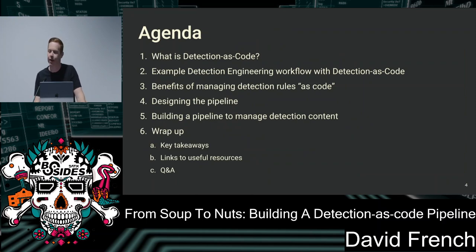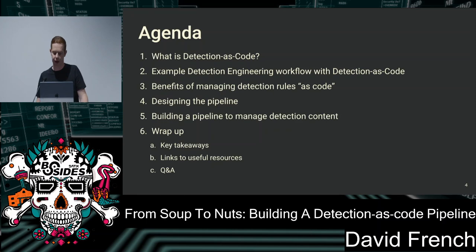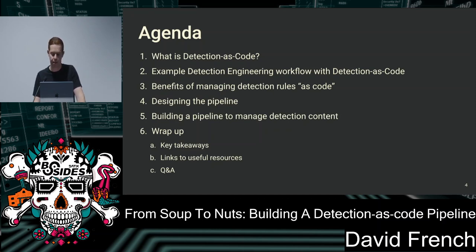Here's what I'll be covering. I'll start by explaining what detection as code is and how it relates to traditional methods of managing rules. We'll walk through an example workflow for a security team developing and managing their rules as code, talk about the benefits, and then walk through designing and building a CI/CD pipeline to manage detection rules. Then we'll wrap up with key takeaways, lessons learned, and links to useful resources and example code to get started.